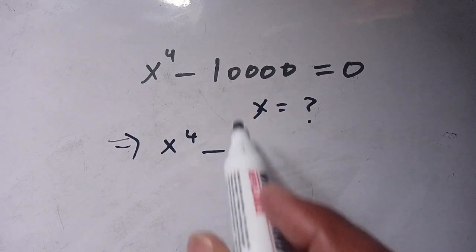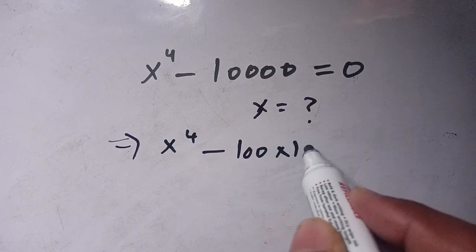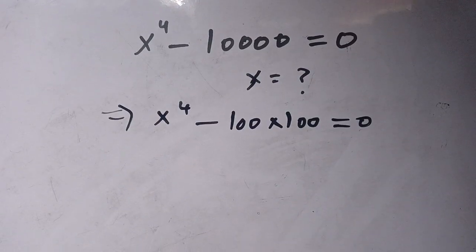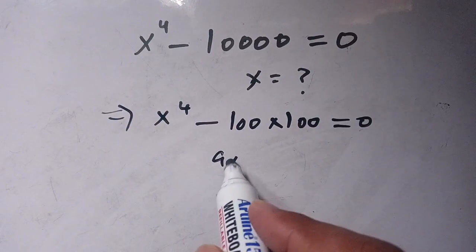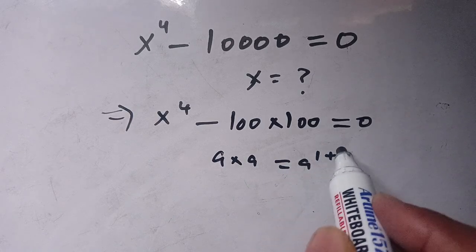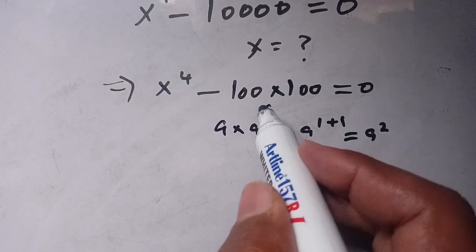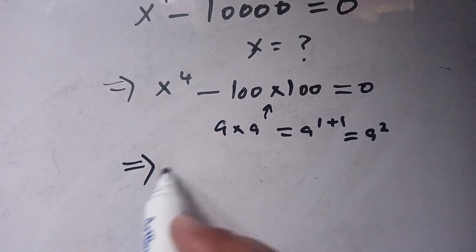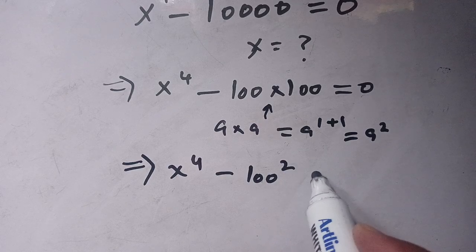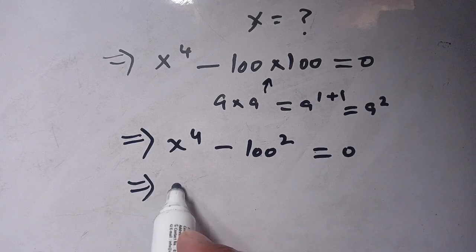First of all, we can rewrite 10,000 as 100 times 100, which equals 10,000. So the equation becomes x to the power 4 minus 100 squared is equal to 0.